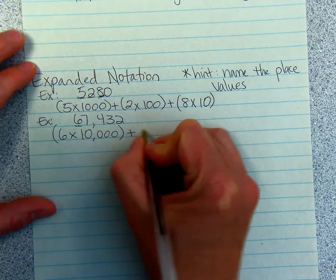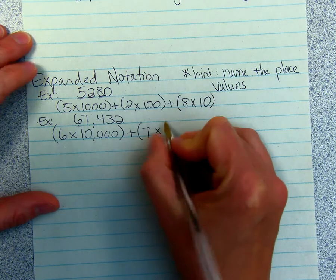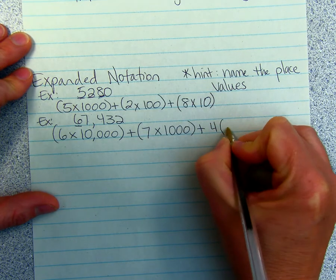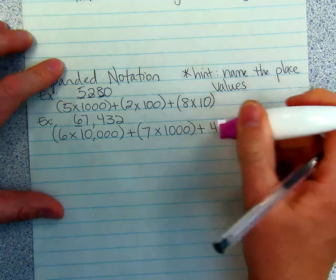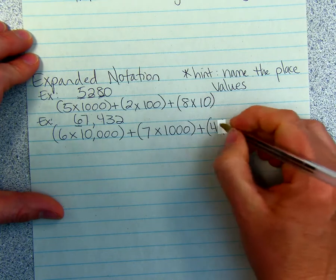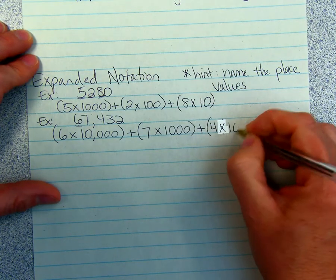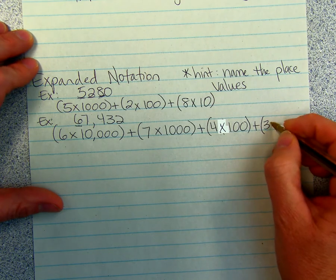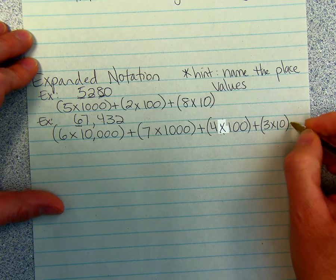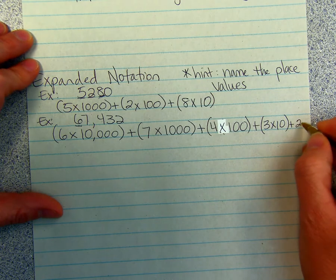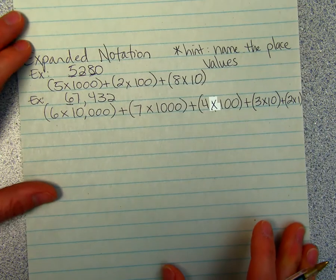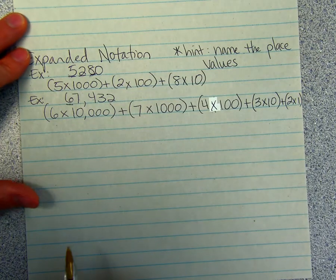Then we do 7 times 1 with 3 zeros. Then we do 4 times, parenthesis comes before the 4, 4 times 1 with 2 zeros plus, and then in parenthesis, 3 times 10 plus 2 times 1. 2 is in the 1's place, so that's why you do 2 times 1.